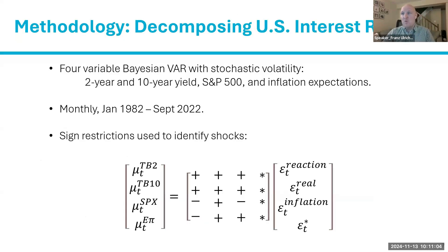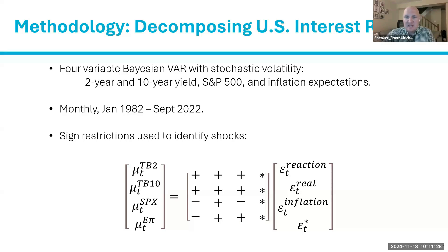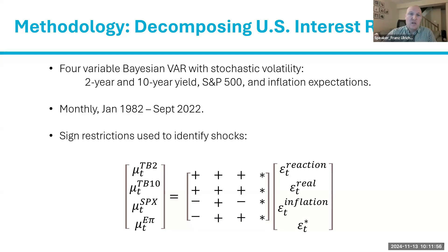We use these decomposed shocks to tell a story of what we saw during the COVID crisis and the 2022 hiking cycle. Methodologically, we run a Bayesian VAR with stochastic volatility on four variables: the two- and ten-year U.S. bond yields, the S&P 500 equity price, and five-year-ahead inflation expectations. The model runs from January 1982 to September 2022, updated to May 2023 for the Global Economic Prospects chapter.